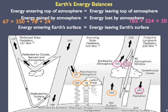A second energy balance is obtained within the atmosphere itself. The energy gained — 67 plus 24 plus 78 plus 350 watts per meter squared — from the four sources shown in orange, is exactly balanced by the energy lost by the atmosphere: 165 plus 324 plus 30 watts per meter squared for the three sources shown in the strawberry color.